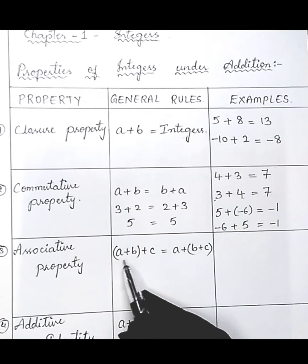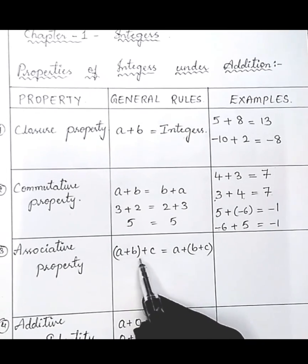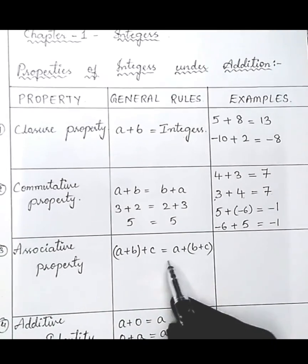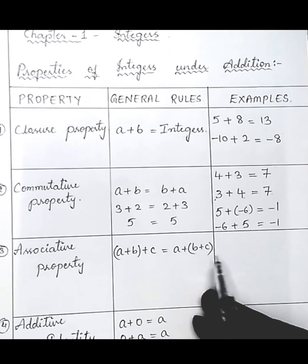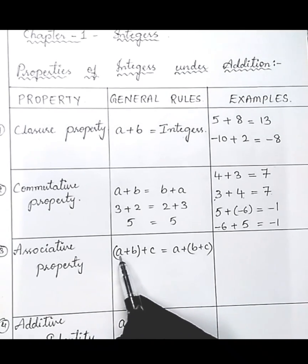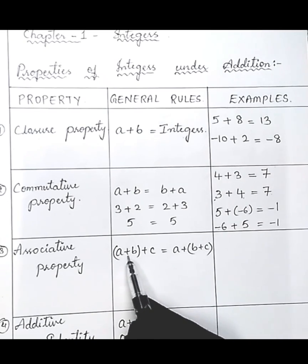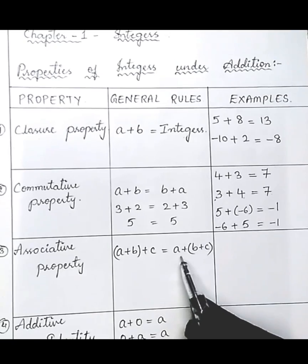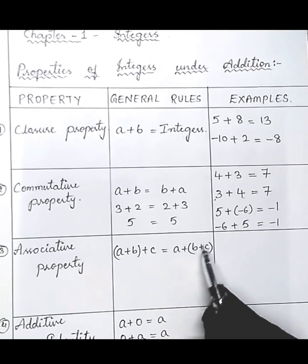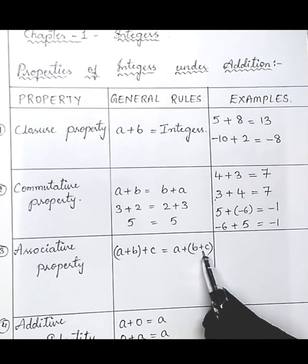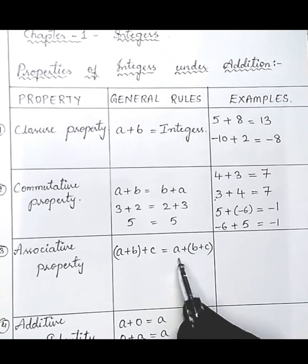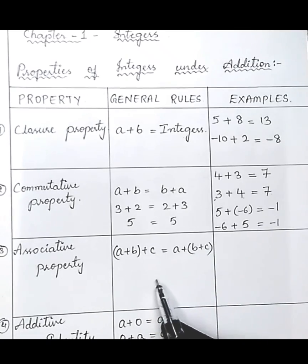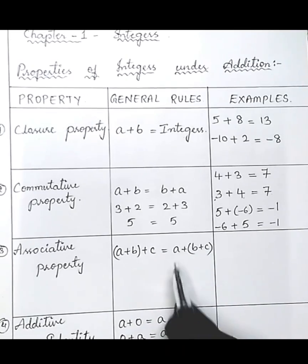The next property is associative property. If three integers are there — a, b, and c — then a plus b plus c equals a plus b plus c. First, if you add a plus b and then add c to the result, or if you add b plus c first and then add a, you get the same result.